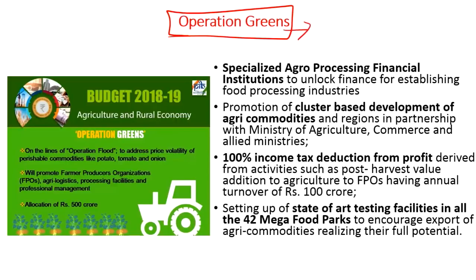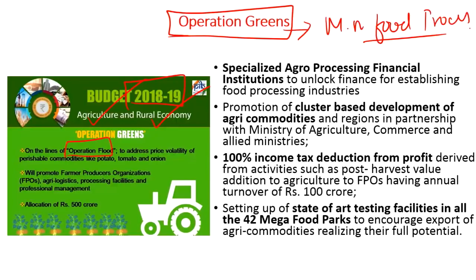The next article is about Operation Greens, a specific program under the Ministry of Food Processing, inaugurated in Budget 2018-19. Its main aspiration is to enhance agriculture and the rural economy in India. Conceptualized on the lines of Operation Flood — which enhanced milk productivity — Operation Greens is mainly aimed at addressing price volatility of perishable commodities. It was initially launched for three highly used perishable commodities: Potato, Tomato, and Onion (PTO), with plans to extend to other perishable commodities in the future.